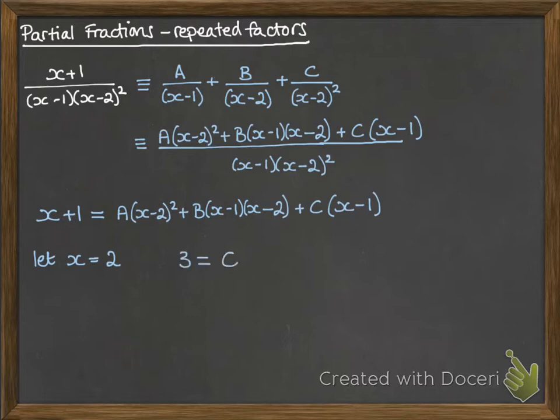So we get on the left-hand side 3 and on the right-hand side C. And then if we do a similar thing with x equals 1, we get the value of A to be 2.